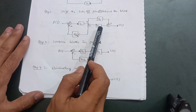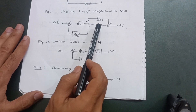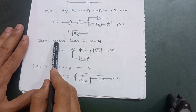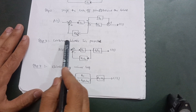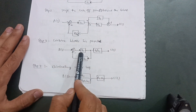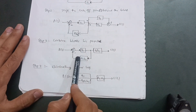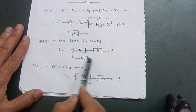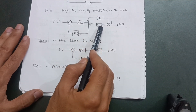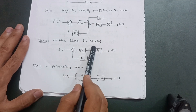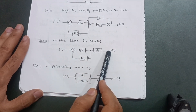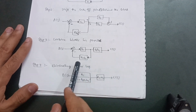When combining blocks in parallel, you add them. Step three: combine blocks in parallel. This is the summing point, G1 is the same, H1·G2 is the same, this is the takeoff point. G3 and G2 are in parallel, so G2 plus G3 becomes one combined block. The diagram is now reduced, and this is the output function.